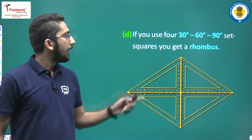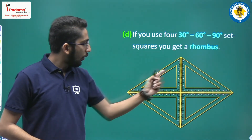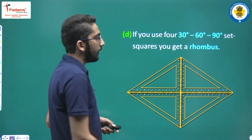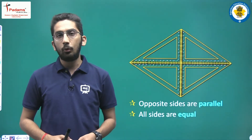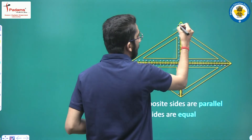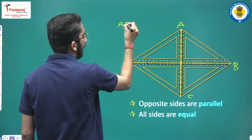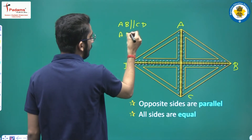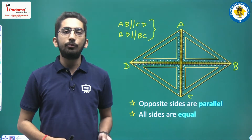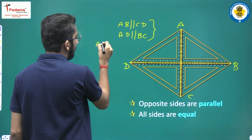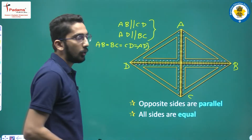Next is a rhombus. If you use four 30-60-90 set squares and arrange them together, you will get a rhombus. Properties of a rhombus: opposite sides are parallel — in rhombus ABCD, AB is parallel to CD and AD is parallel to BC. Also, all sides are equal, just like a square: AB equals BC equals CD equals DA.